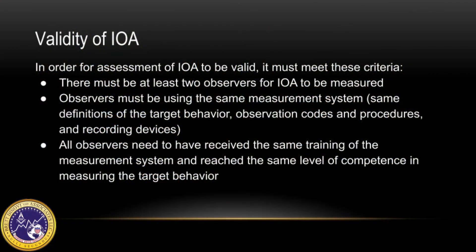In order for the assessment of IOA to be valid, it must meet some criteria. There must be at least two observers for IOA to be measured. Observers must be using the same measurement system, including the same definitions of the target behavior, observation codes and procedures, and recording devices. All observers need to have received the same training and reached the same level of competence in measuring the target behavior.